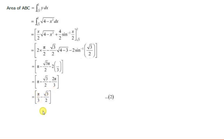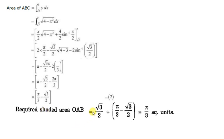Now we add both areas to get the total shaded area. The triangle area was √3/2, and the arc area is π/3 − √3/2. Adding them: √3/2 + π/3 − √3/2 = π/3. So the area of the shaded region is π/3 square units. That's all. Thank you.